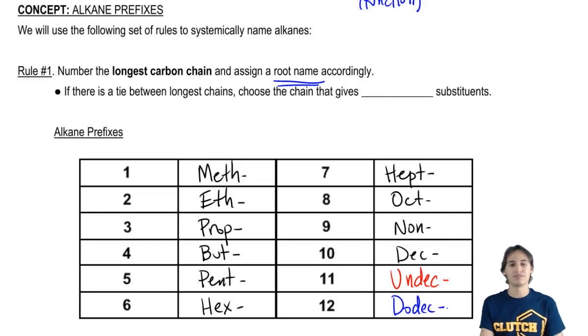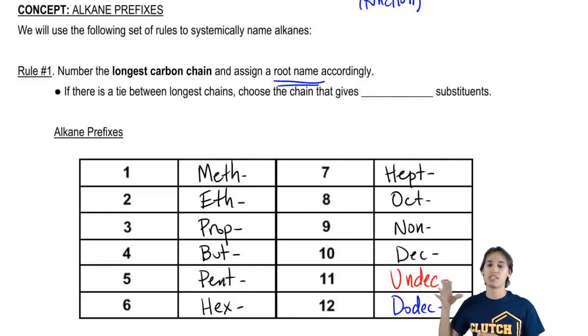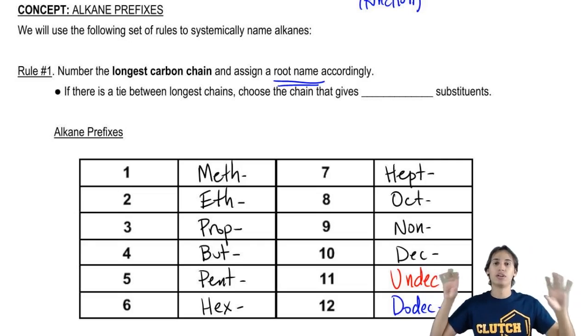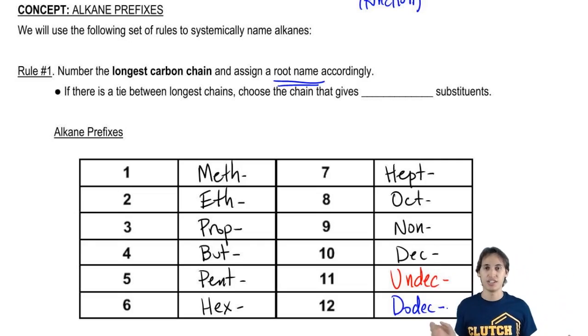And I don't know if you can just somehow remember that that's 1 and 2 plus 10, then that will help. Okay? So those are the prefixes that you need to know. These are going to be the ones that tell you basically how long that root or parent chain is.